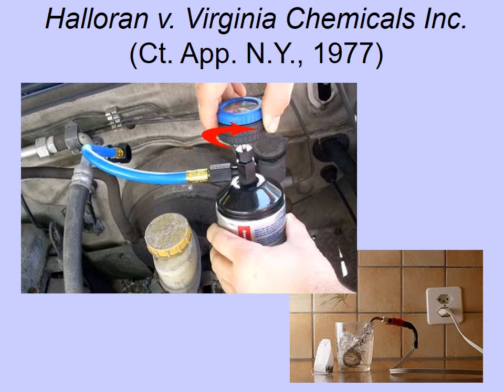Let's talk briefly about the Halloran v. Virginia Chemicals case. The plaintiff was an auto mechanic suing the manufacturer of a can of refrigerant that exploded and injured him. At trial, the defendant company wanted to present testimony showing that the plaintiff had frequently used an immersion heating coil to heat the cans of refrigerant to make them flow faster into a car air conditioner when doing air conditioning repairs — despite warnings on the can's label that this method was dangerous and not recommended.